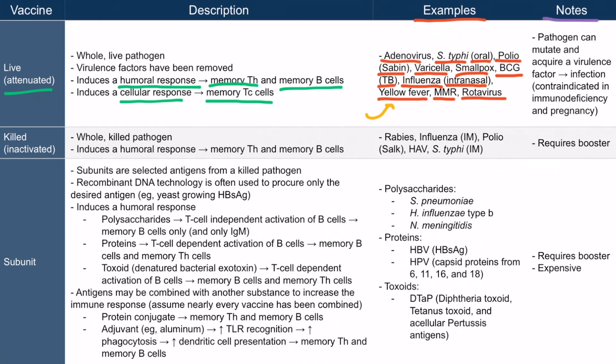There are some important notes to keep in mind with live vaccines. There is an unlikely possibility that the pathogen can mutate and acquire a virulence factor, meaning it can actually cause an infection that will harm the patient. With live attenuated vaccines, we assume virulence factors have been removed, but the pathogen can potentially regain one and cause infection.